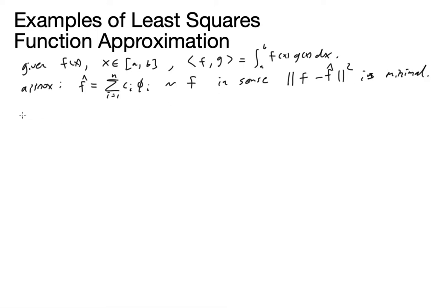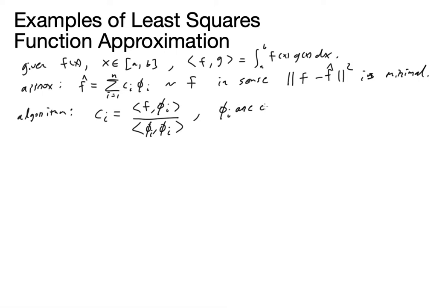The approximation is optimal in the sense that the squared magnitude of f minus f-hat is minimal. The procedure — you can call it an algorithm because it can be done sequentially — is that the c_i can be computed in sequence by taking the inner product of f with each function and dividing by the inner product of those functions with themselves. The one requirement is that the φ_i must be orthogonal: φ_i and φ_j must equal zero when i is not equal to j.